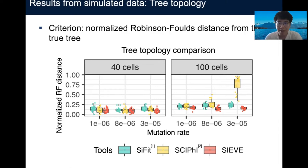The first thing we want to compare is tree topology, using normalized Robinson-Foulds distance from the true tree as criterion. Note that the smaller the distance is, the better the results are. It is obvious that SCIF outperforms both comparison methods.